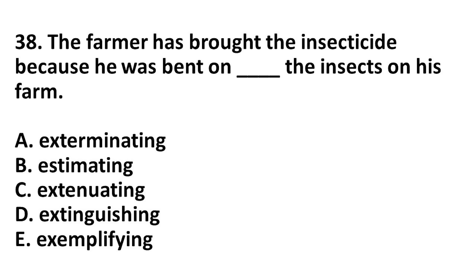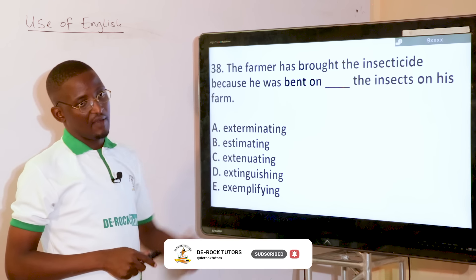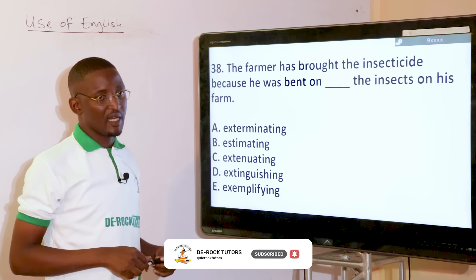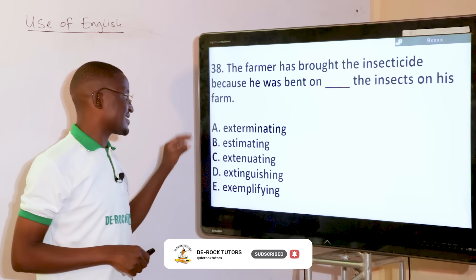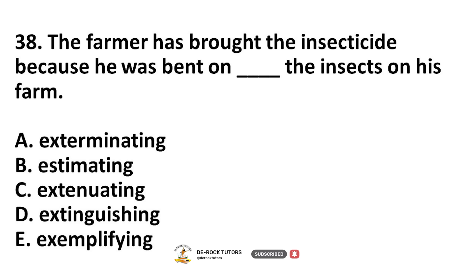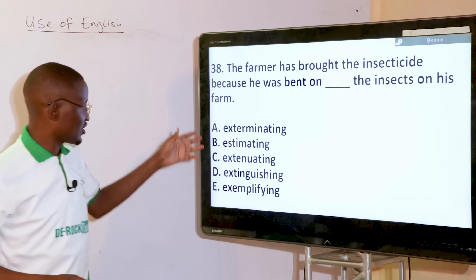The farmer has brought the insecticide because he was bent on dash the insects on his farm — that is, having to get rid of them, exterminating them. The answer is exterminating, option A — to kill the insects on his farm.